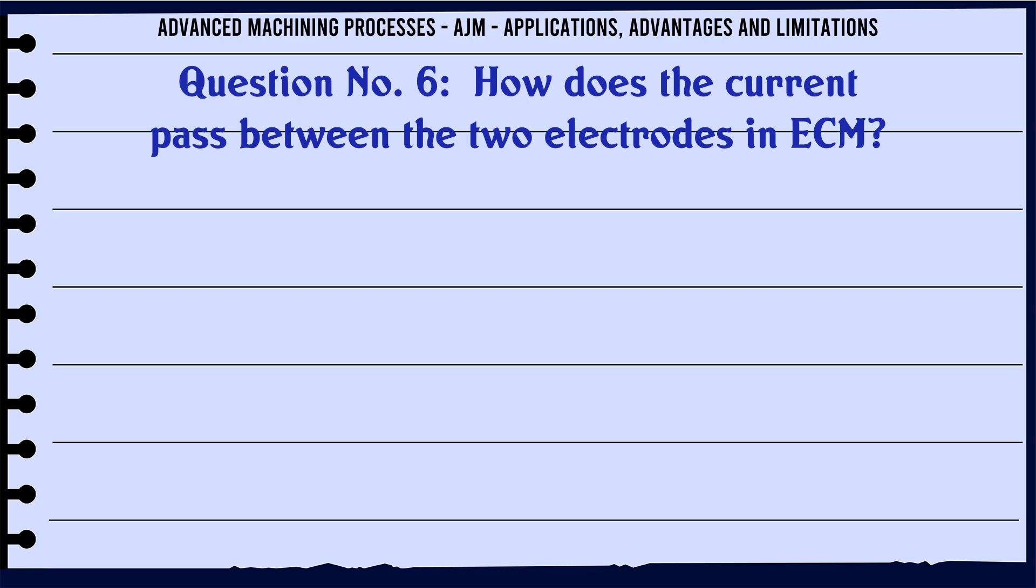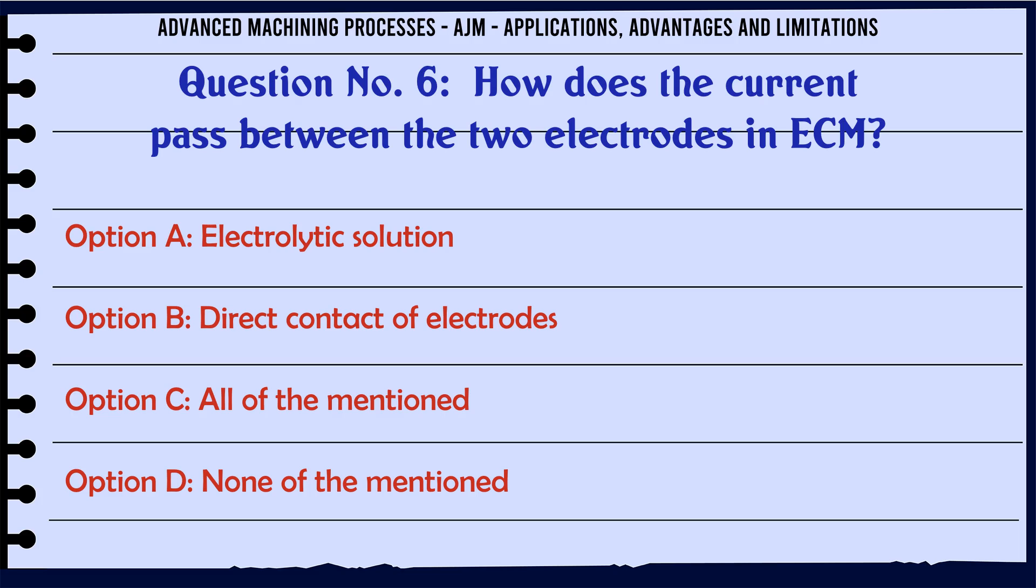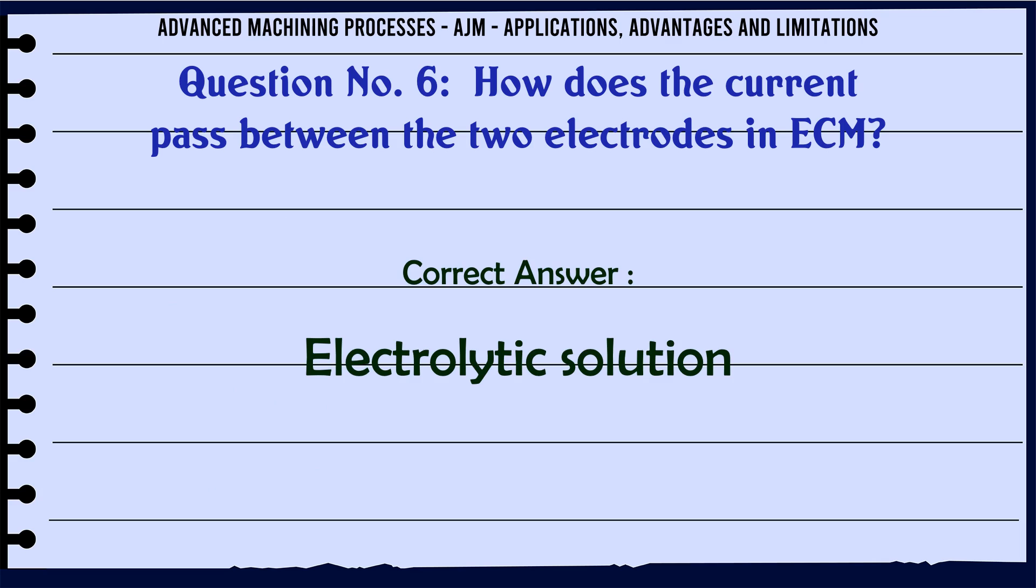How does the current pass between the two electrodes in ECM? Option A: Electrolytic solution. Option B: Direct contact of electrodes. Option C: All of the mentioned. Option D: None of the mentioned. The correct answer is electrolytic solution.